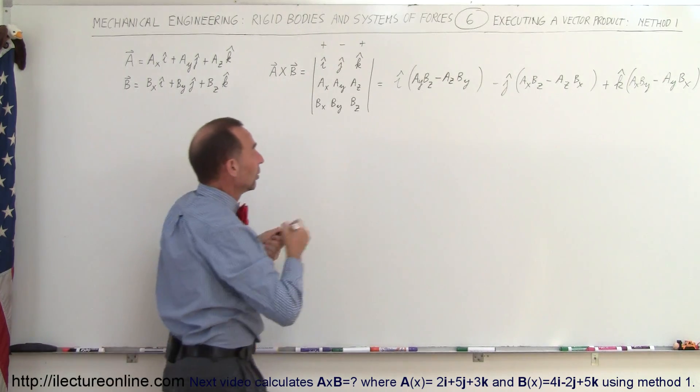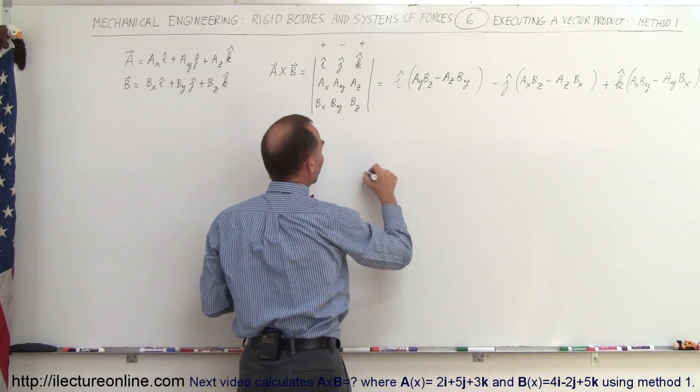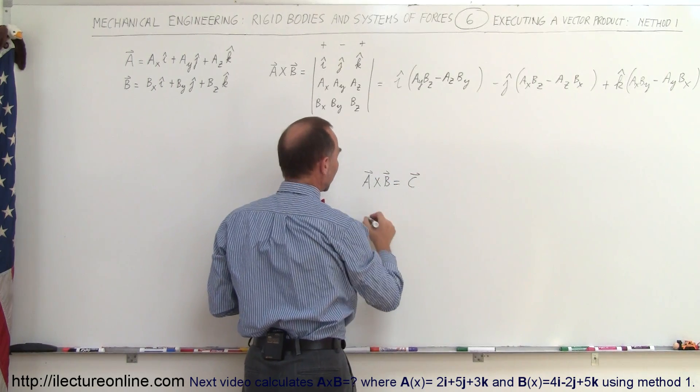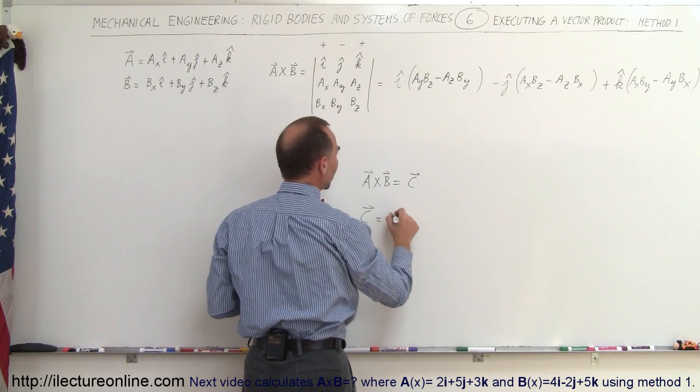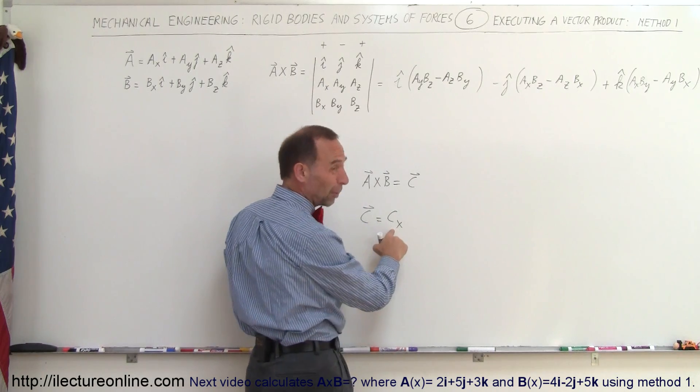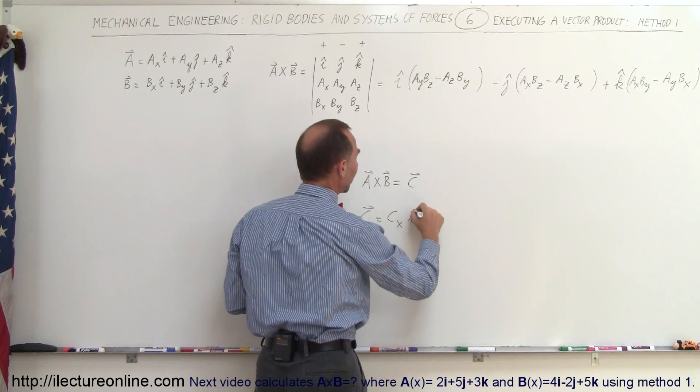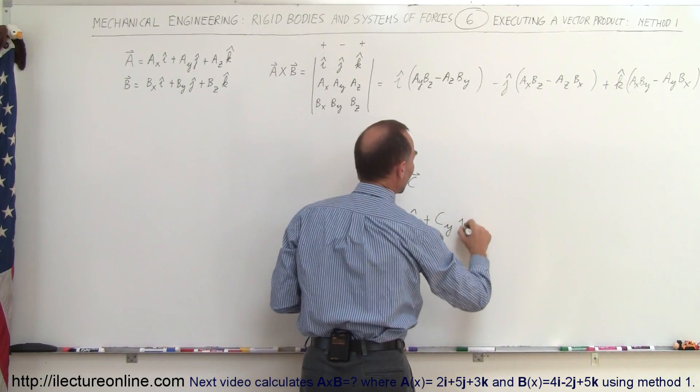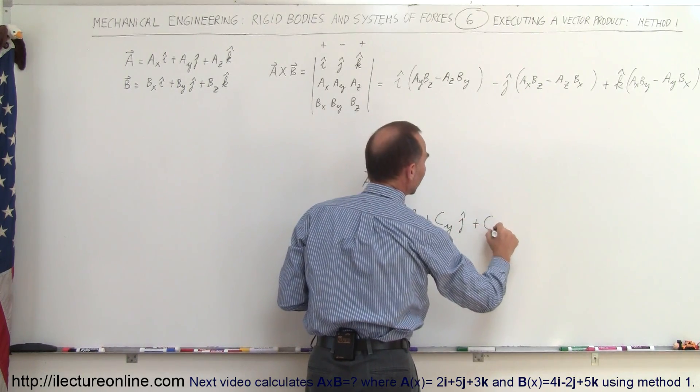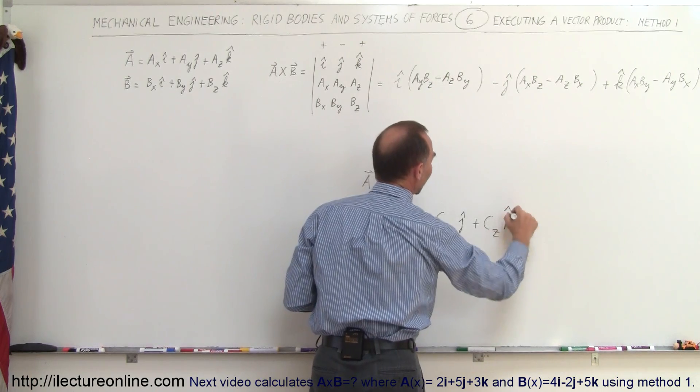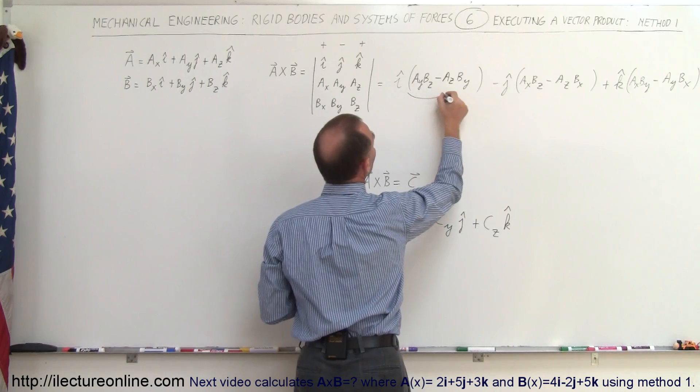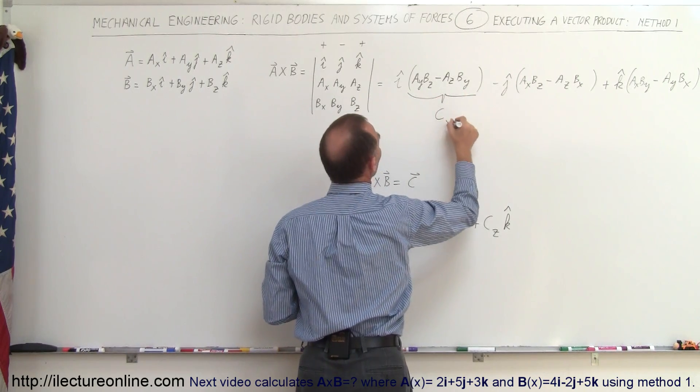Now, of course, if you assume that A cross B is going to be another vector, let's say it's going to be the C vector, then we can write C equal to the component of C in the X direction times the i vector, plus the component of C in the Y direction times the j vector, plus the component in the Z direction times the k vector. So that means that Cx will be equal to this quantity. So this here will be Cx.